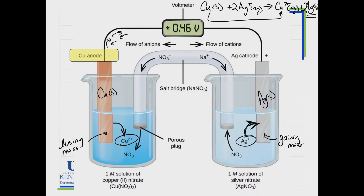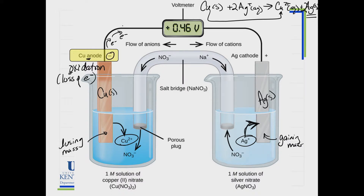Now let's learn the terminology. On the left-hand side is the anode. The anode is where oxidation occurs — loss of electrons. Here's how to remember it: anode starts with 'a' and oxidation starts with 'a'. The anode is labeled negatively charged because electrons are coming out of it.